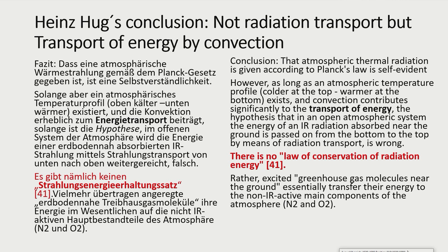However, as long as an atmospheric temperature profile, colder at the top warmer at the bottom exists, and convection contributes significantly to the transport of energy, the hypothesis that in an open atmospheric system the energy of an IR radiation absorbed near the ground is passed on from the bottom to the top, by means of radiation transport, is wrong.